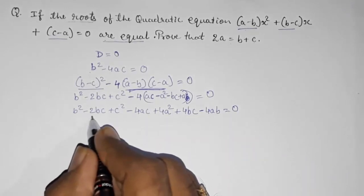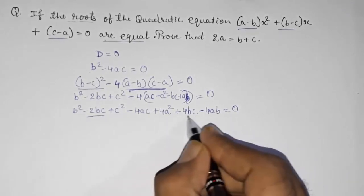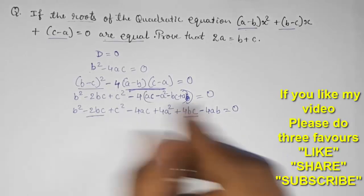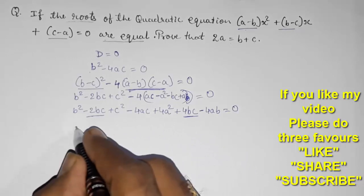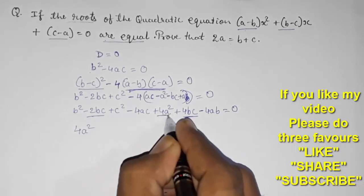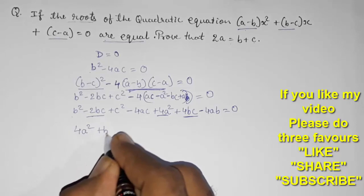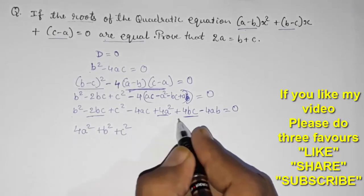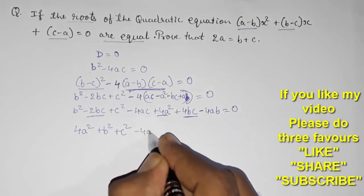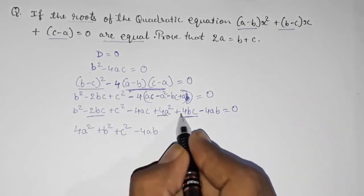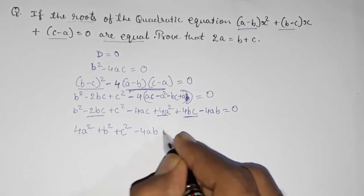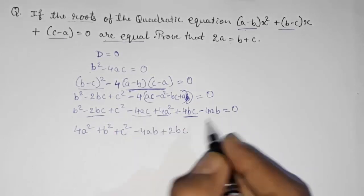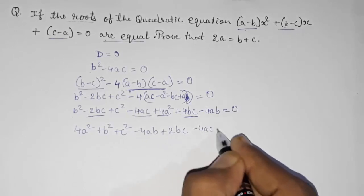Now collect like terms. We have minus 2bc and plus 4bc which combine. Starting with: 4a squared plus b squared plus c squared minus 4ab plus 2bc minus 4ac equals 0.